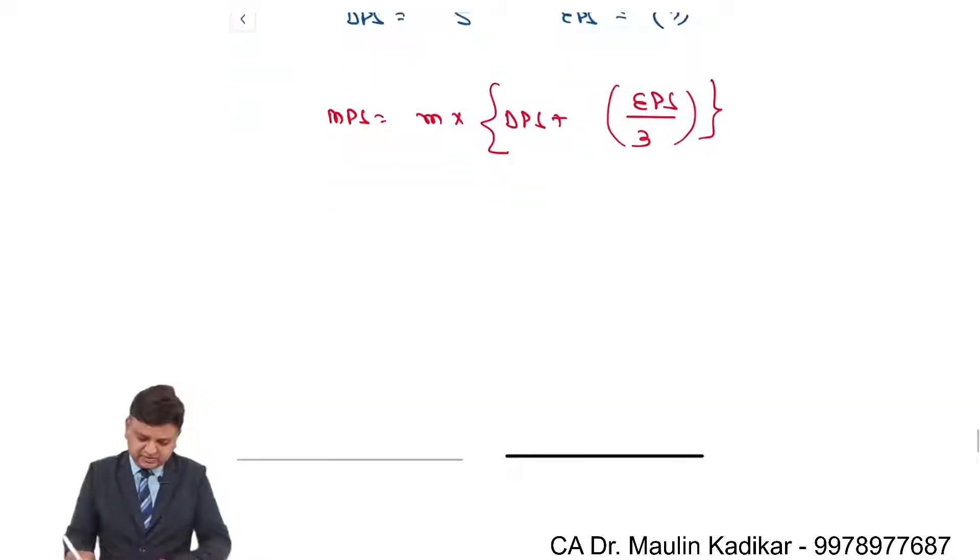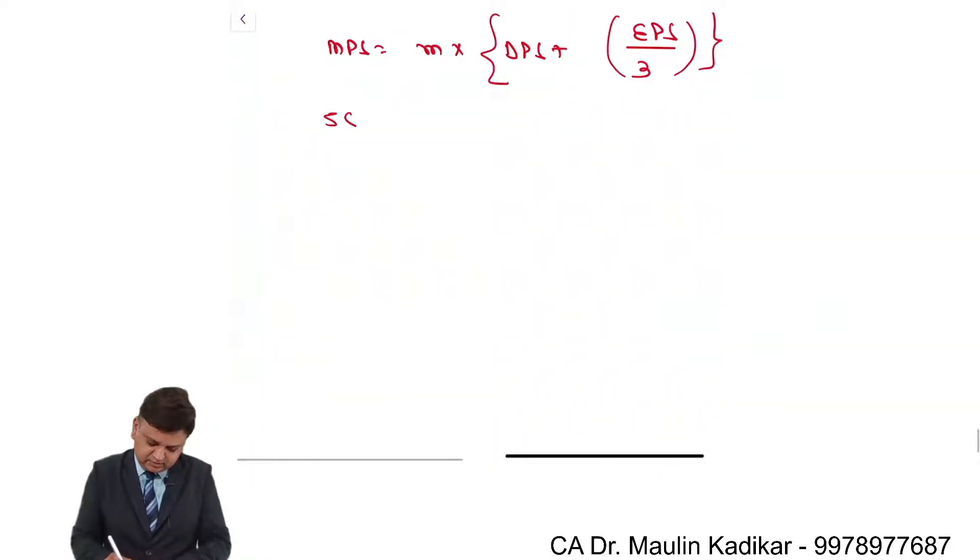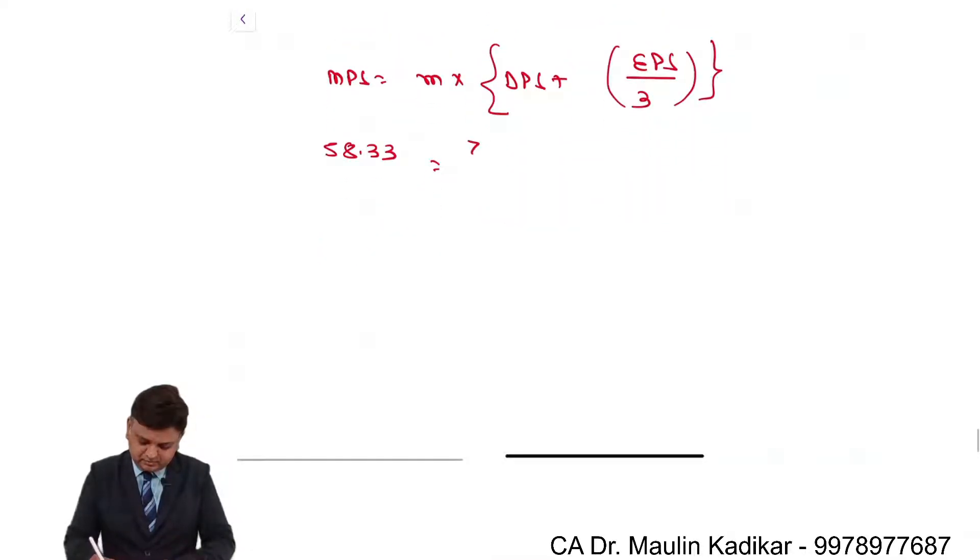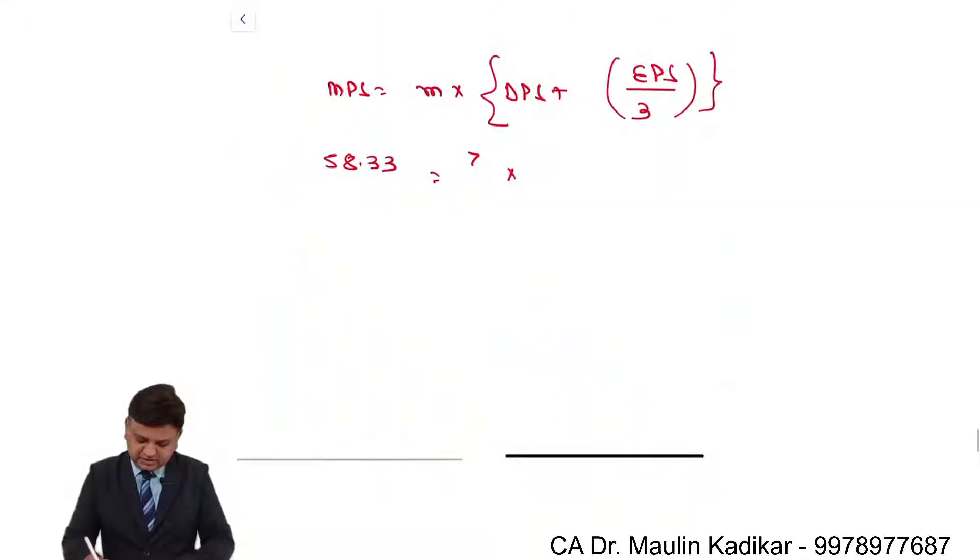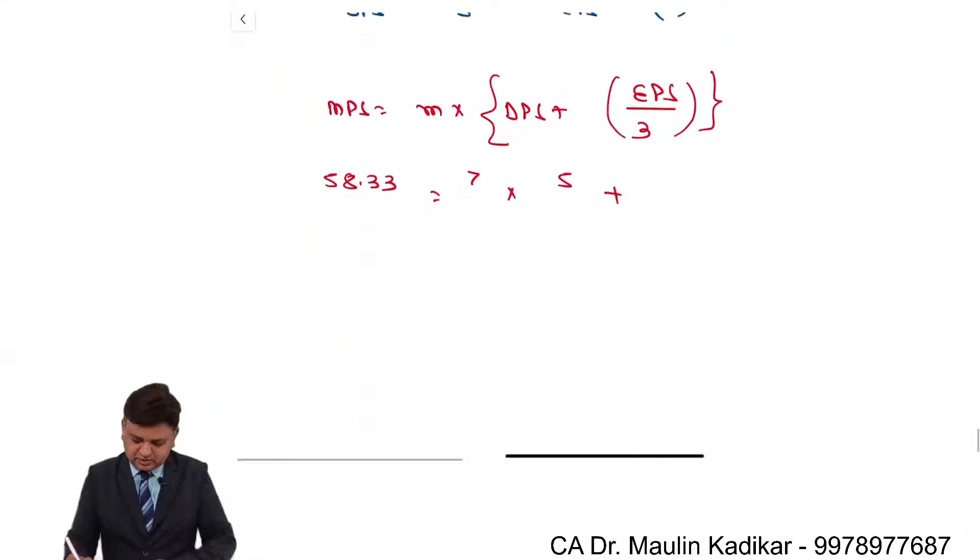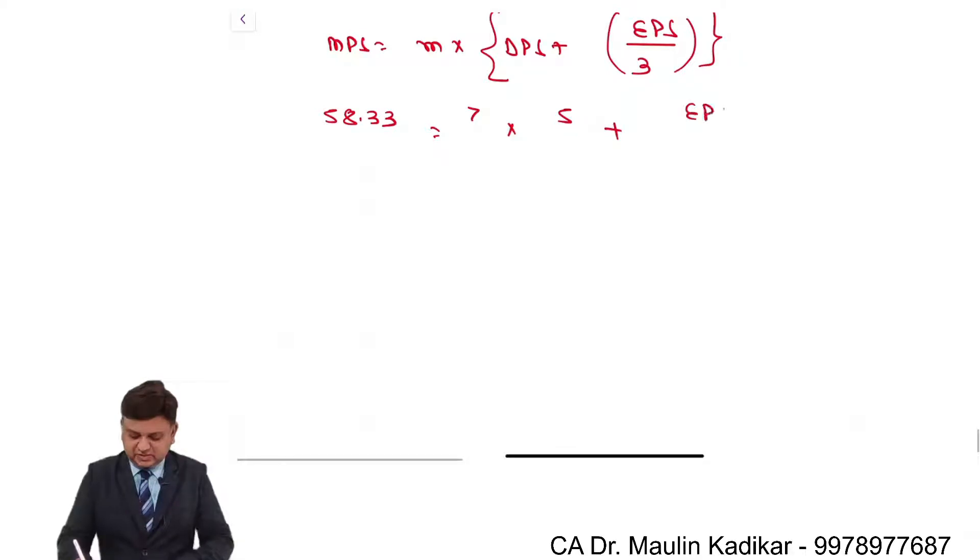Market price of the share is 58.33. Multiplier is 7, dividend portion is 5, earning portion is balancing figure divided by 3.